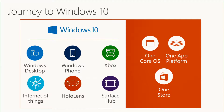The journey to Windows 10 has taken some time, but we've finally come to the point where we have one core operating system and one app platform, with one store to deliver your package that will run on all six devices: Windows desktop, phone, Xbox, IoT, HoloLens, and the Surface Hub.